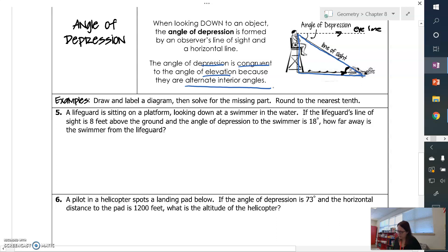So let's solve a problem just like this one that we talked about. We've got the lifeguard sitting on the platform looking down at the swimmer. The lifeguard's line of sight is 8 feet above the ground. So here's their line of sight. This is 8 feet.